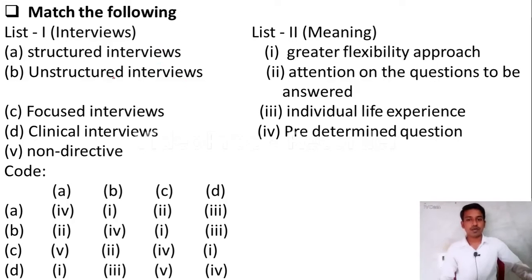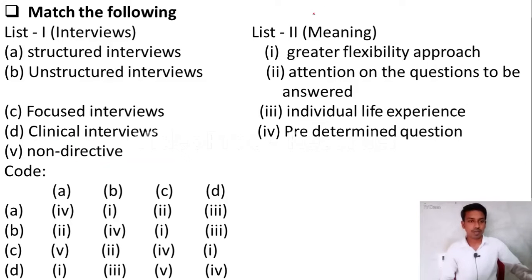Here, match the following. List 1 shows types of interviews: Option A — structured interviews; Option B — unstructured interviews; Option C — focused interviews; Option D — clinical/non-directive interviews. List 2 shows meanings: greater flexibility approach; attention on the questions to be answered; individual life experience; predetermined questions.